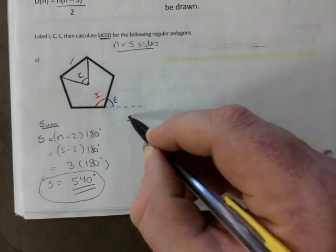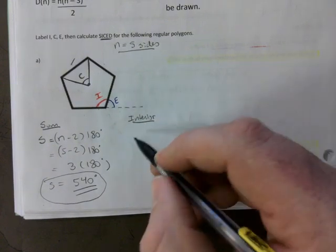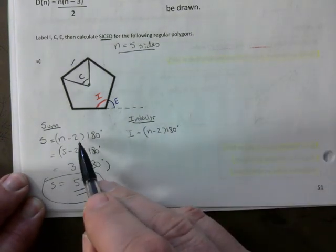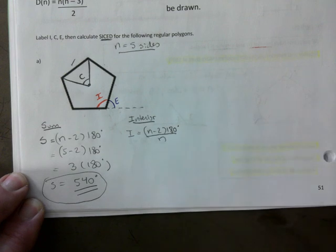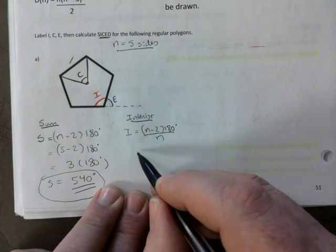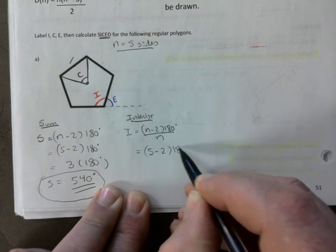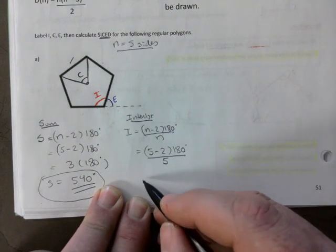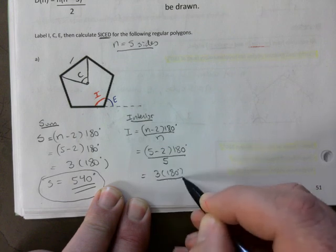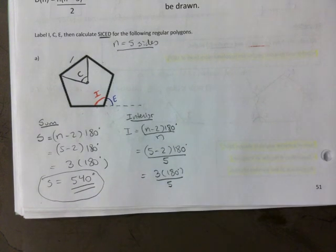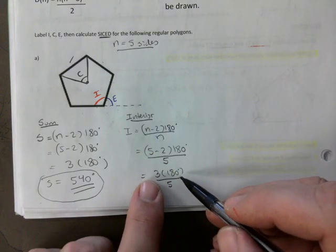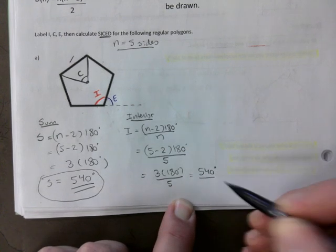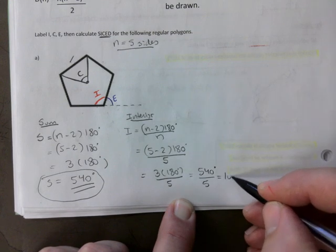So you're saying that all the interior angles in this shape add up to 540 degrees. We're not done yet. Interior. That's this. I is equal to N minus two times 180. It's exactly the same as the sum. Except for here, you're going to divide by the number of sides. So it's five minus two times 180 over five. That's three times 180. Make sure you copy this before you go. Okay. Three times 180 over five. I know that three times 180 is 540. You divide that by five. You get 108 degrees.